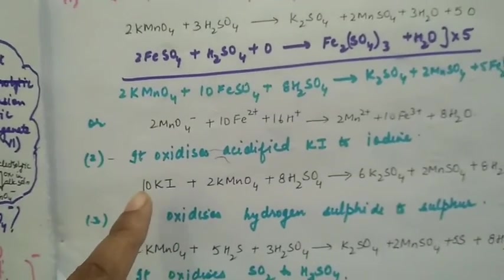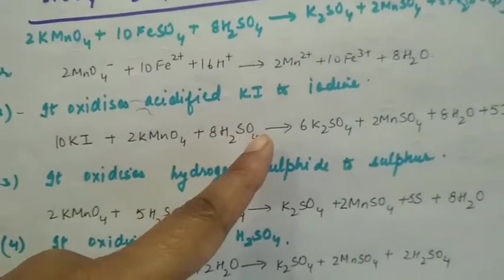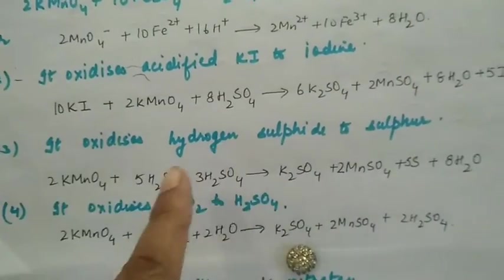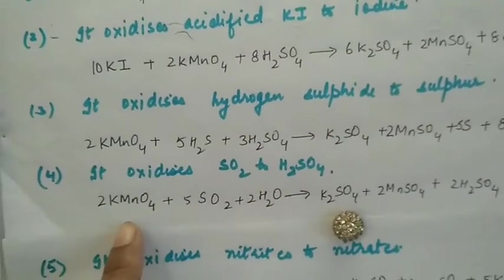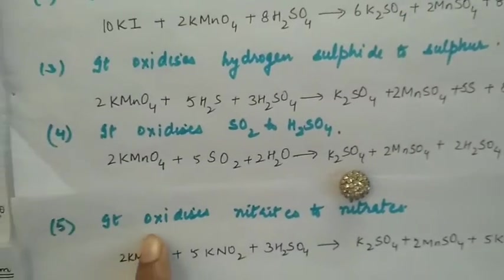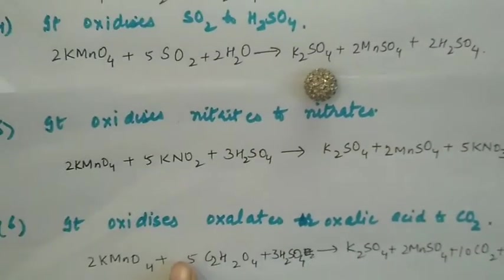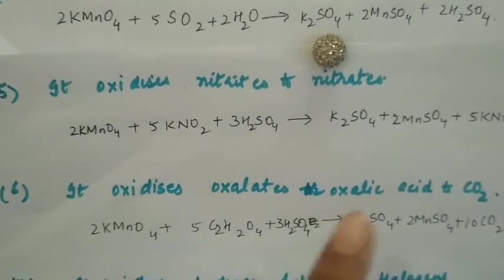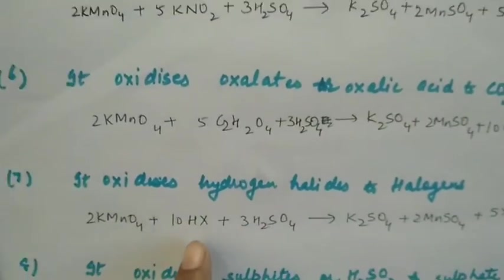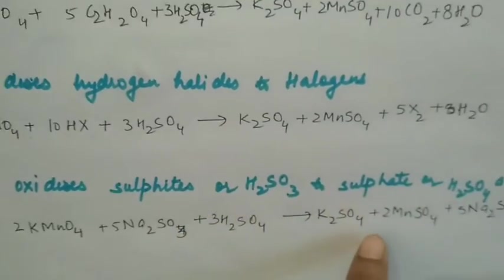Just as it oxidizes ferrous sulfate to ferric sulfate, similarly acidic KMnO4 can oxidize potassium iodide to iodine, forming potassium sulfate, manganese sulfate, water, and iodine. It oxidizes hydrogen sulfide to sulfur, sulfur dioxide to sulfuric acid, nitrites to potassium nitrate, oxalates or oxalic acid to carbon dioxide, hydrogen halides to halogens, and sulfites to sulfates.